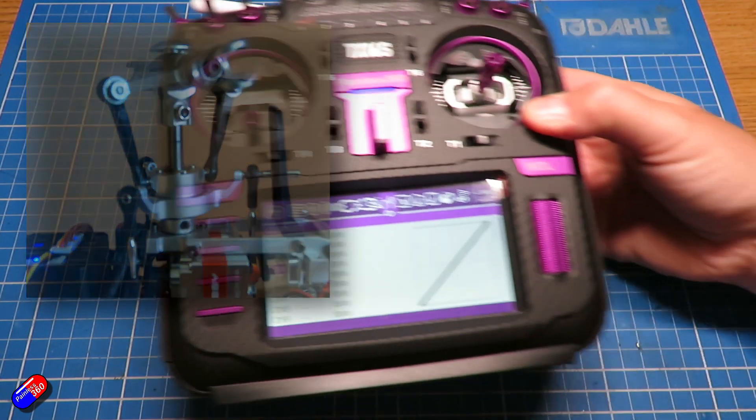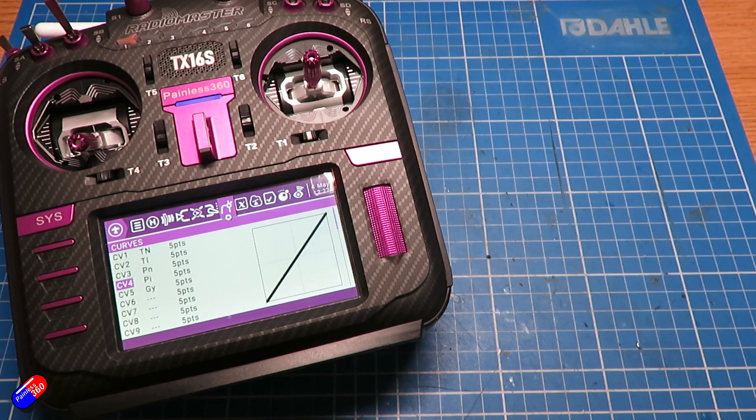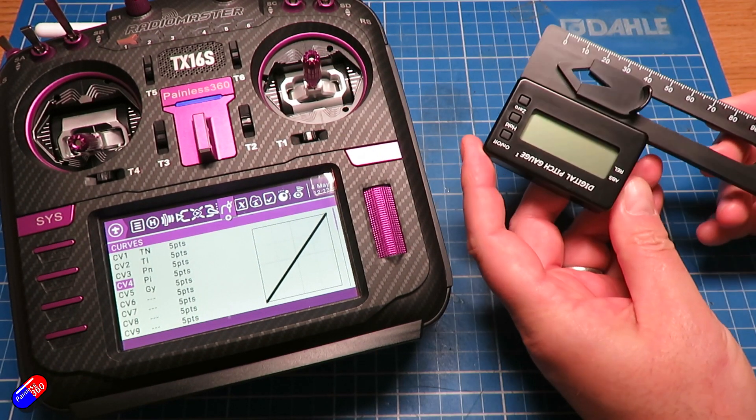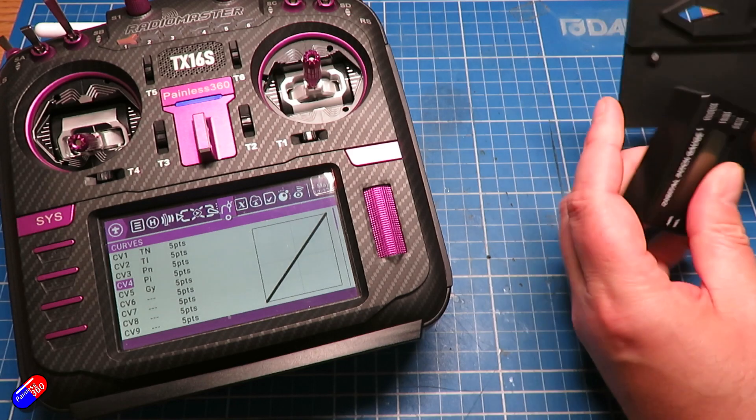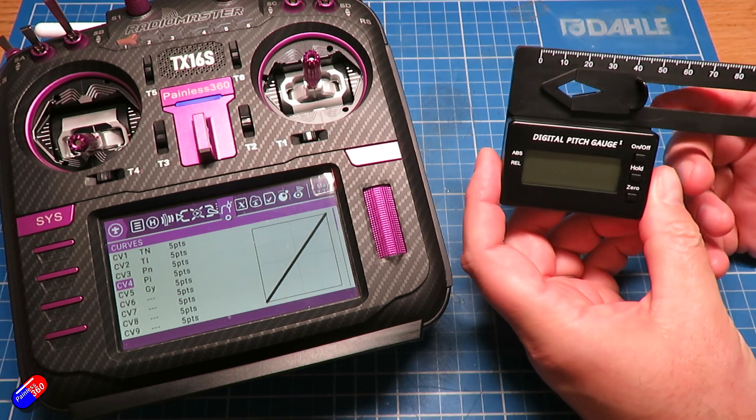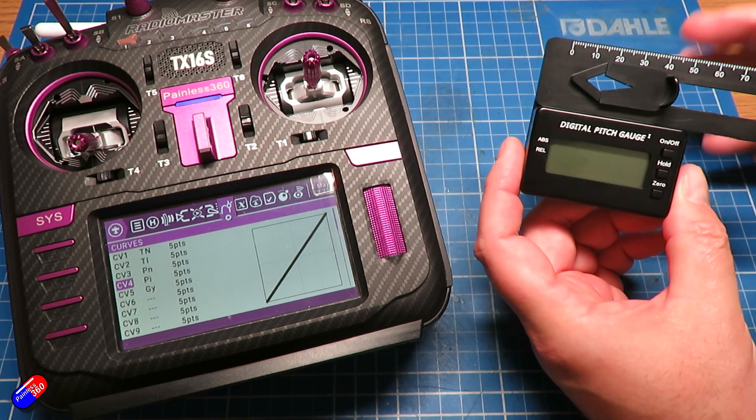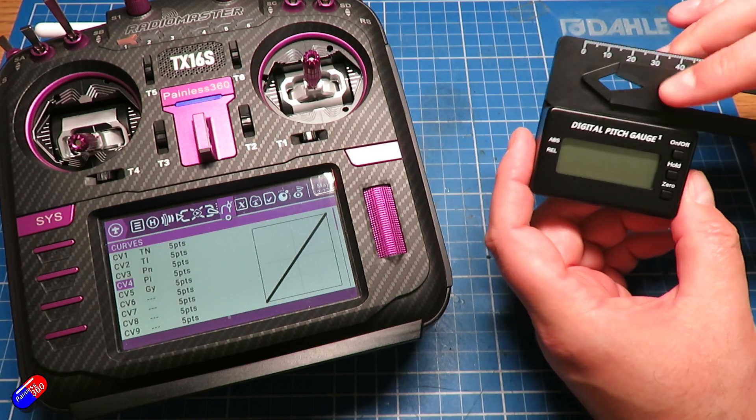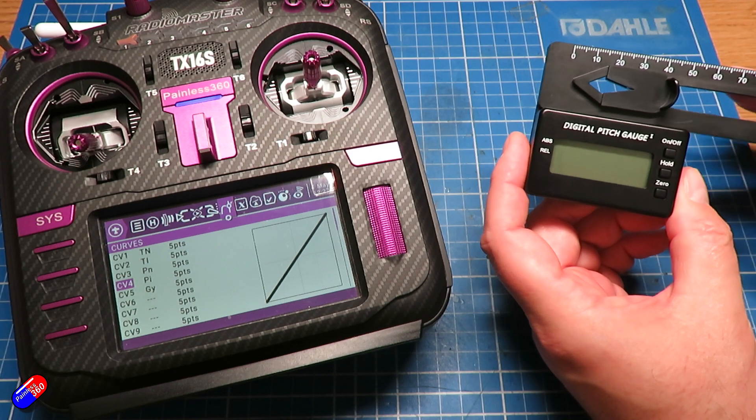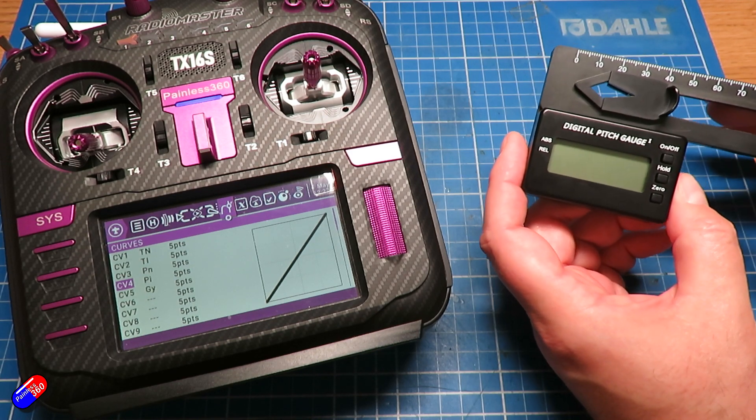When you actually get your helicopter you'll find that you'll end up buying lots of extra gadgets like this. This actually measures the pitch on the blades. So the way this works is that when you are setting things up, if you want to, you can buy something like this, put it on the blades themselves, and then you can measure the actual pitch changes so you can set up the head perfectly.